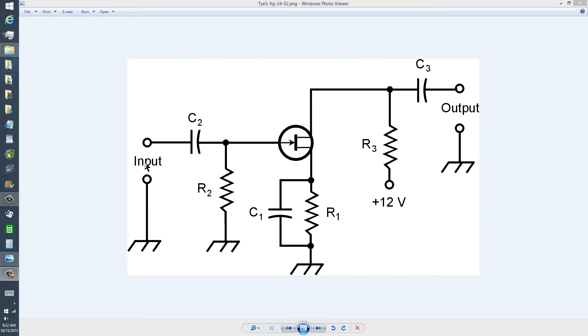The signal comes in here, passes through this blocking capacitor, which keeps whatever is in the input from affecting the bias on the gate of the field effect transistor.